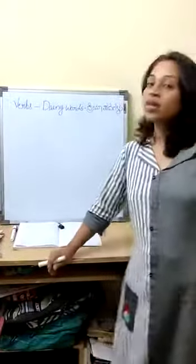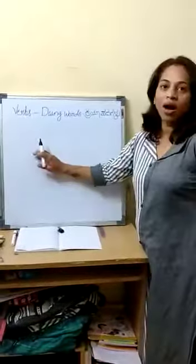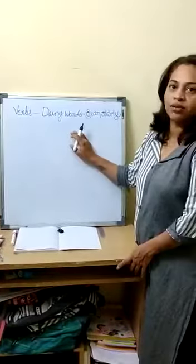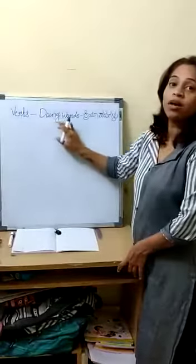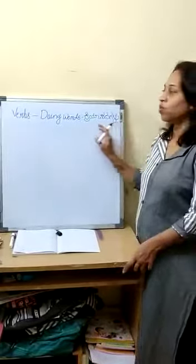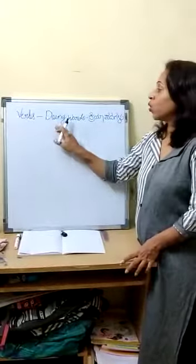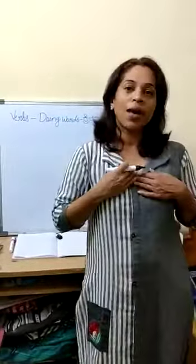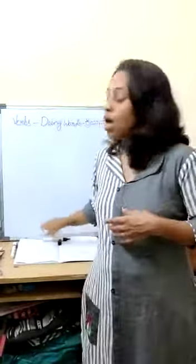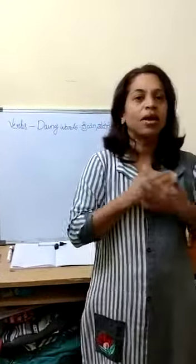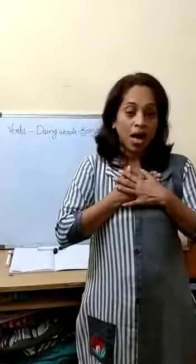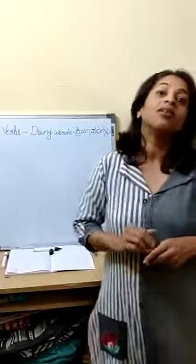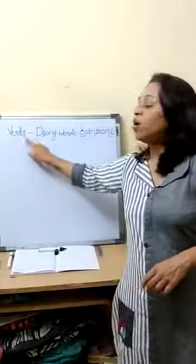Okay children. After am, are and is, now we will see the verbs. Verbs means doing words — in Kannada, kriyapadagalu. Doing words means: I am eating, I am sleeping, I am standing, I am sitting. These are the words we call as verbs.